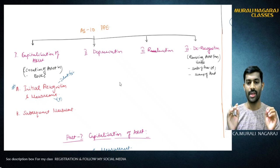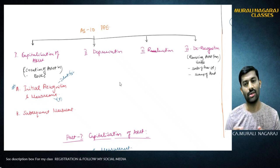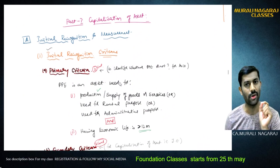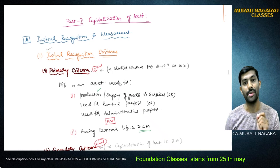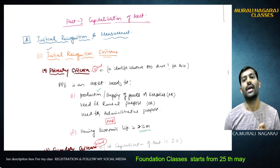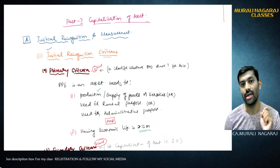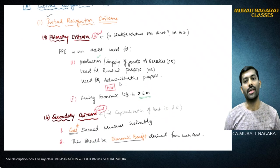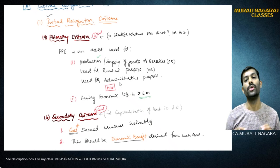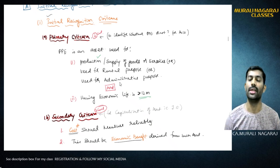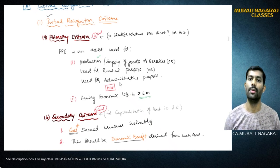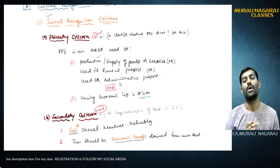As part of the first component - recognition of PPE - initially an asset has to be recognized at cost. To recognize whether it's an asset or not, first we should ensure it qualifies as PPE under AS10. It has to satisfy two conditions: number one, it should be an asset used in production or supply of goods or services, or for rental or administrative purposes, and second, it should have an economic life of more than 12 months.